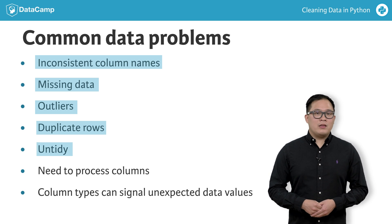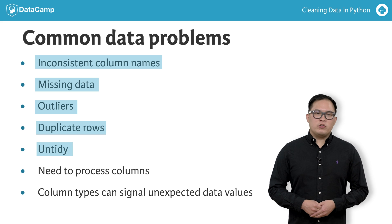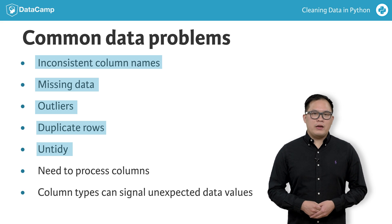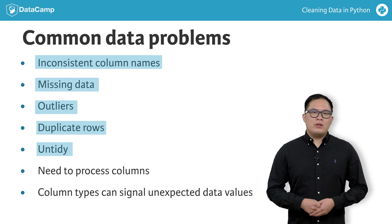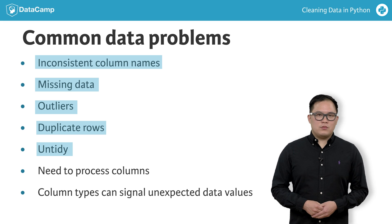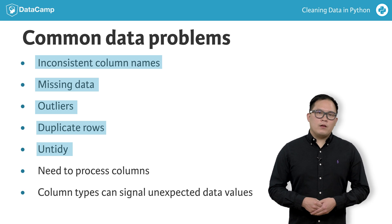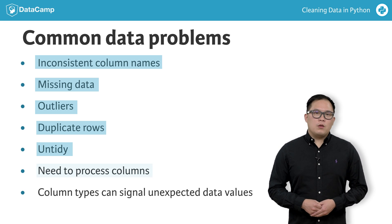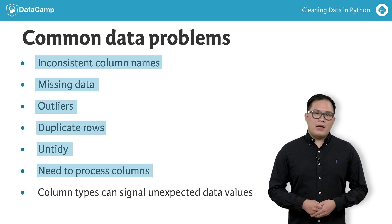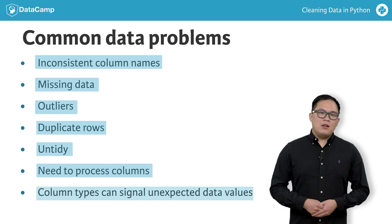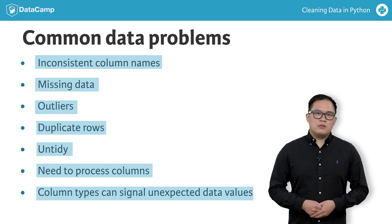Untidy data sets can contain multiple problems and prevent us from quickly transforming our data set from one suitable for reporting to a data set that is suitable for analysis. Other common data problems are processing columns before a column can be used for data analysis, and column types can signal the presence of unexpected data values.